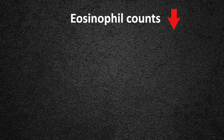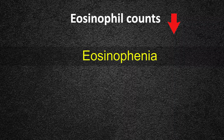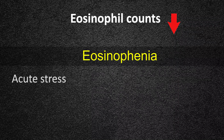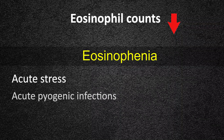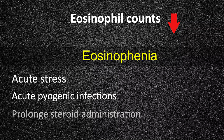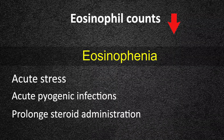Why and when does the eosinophil count go low? When eosinophil counts are lower than normal, it is called eosinopenia. Acute stress, acute pyogenic infections, and prolonged steroid administration can cause eosinopenia.